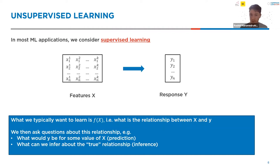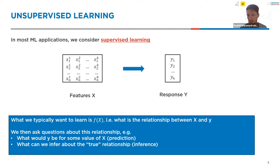Once we learn that relationship, we can ask a lot of interesting questions. Given some unseen observation, what would the outcome be? That's a prediction task. We might also be interested in inference — observing some statistics and asking what they tell us about the real relationship. For example, if we want to learn about the heights of everyone in the UK, we'll measure a subset and then try to infer how certain we can be about the population as a whole.